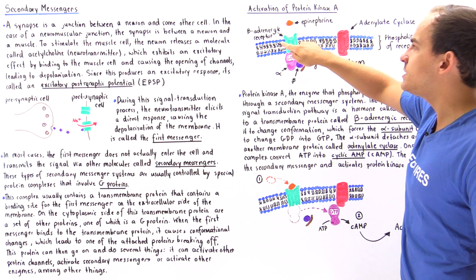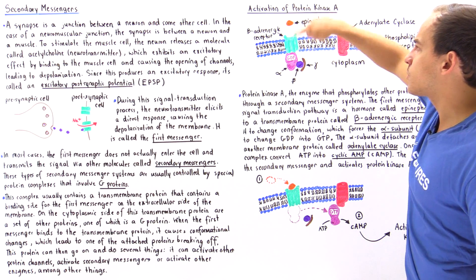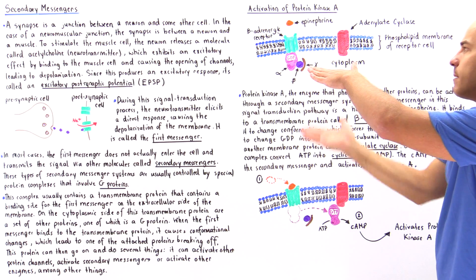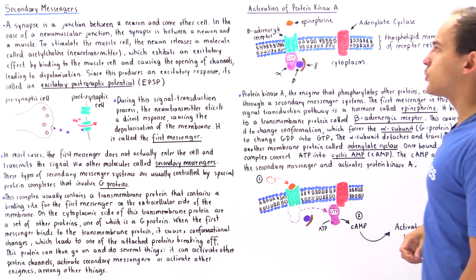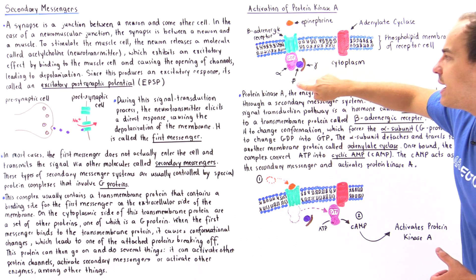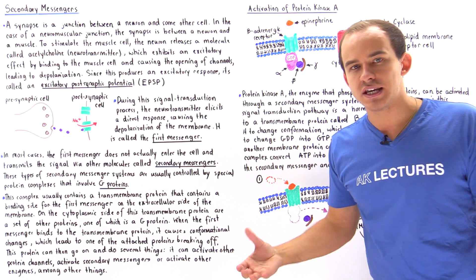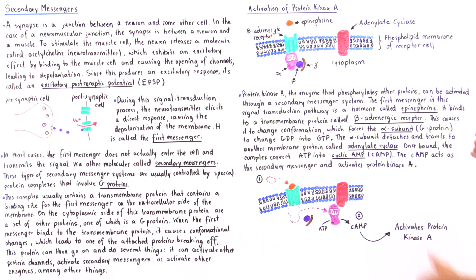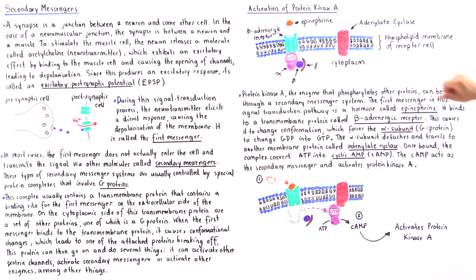We have epinephrine and the transmembrane protein — shown in green — which spans from the outside to the inside of the cell. This transmembrane protein is known as the beta-adrenergic receptor. On the cytoplasmic side of this receptor, we have a complex of other proteins: the alpha subunit, the beta subunit, and the gamma subunit. The alpha subunit is our G-protein. On a separate section of the membrane, we have another protein called adenylate cyclase, which is also involved in this process.